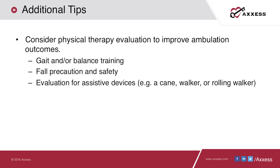If the score for your patient is two, three, four, or five, consider an order for a physical therapy evaluation for transfer training, strengthening, and endurance, as well as balancing exercises. The therapist can instruct the patient or caregiver on safety, wheelchair mobility, and any additional devices that may be indicated.